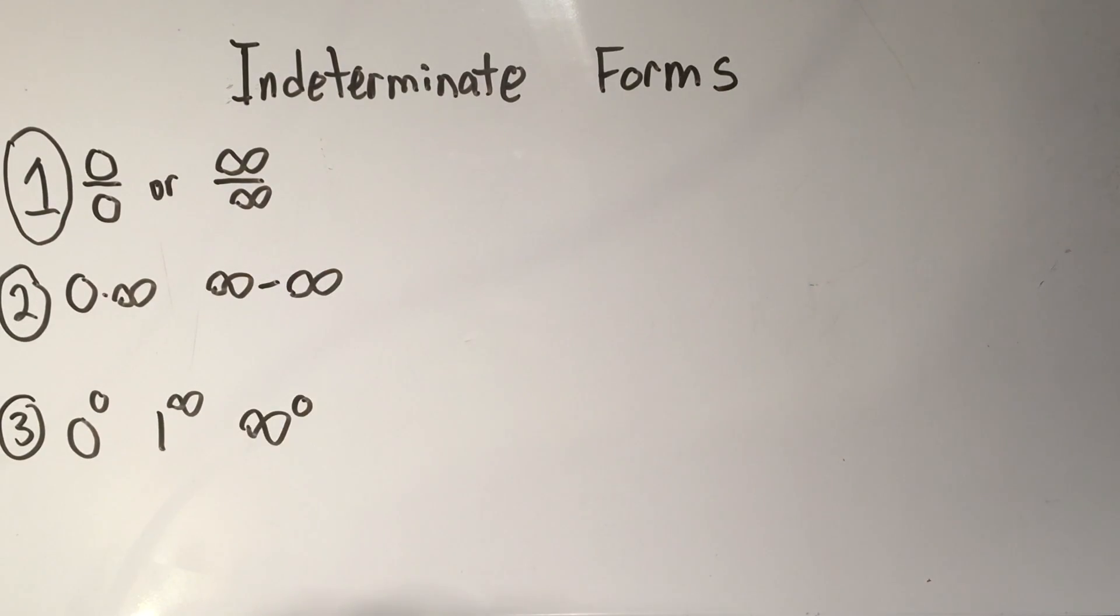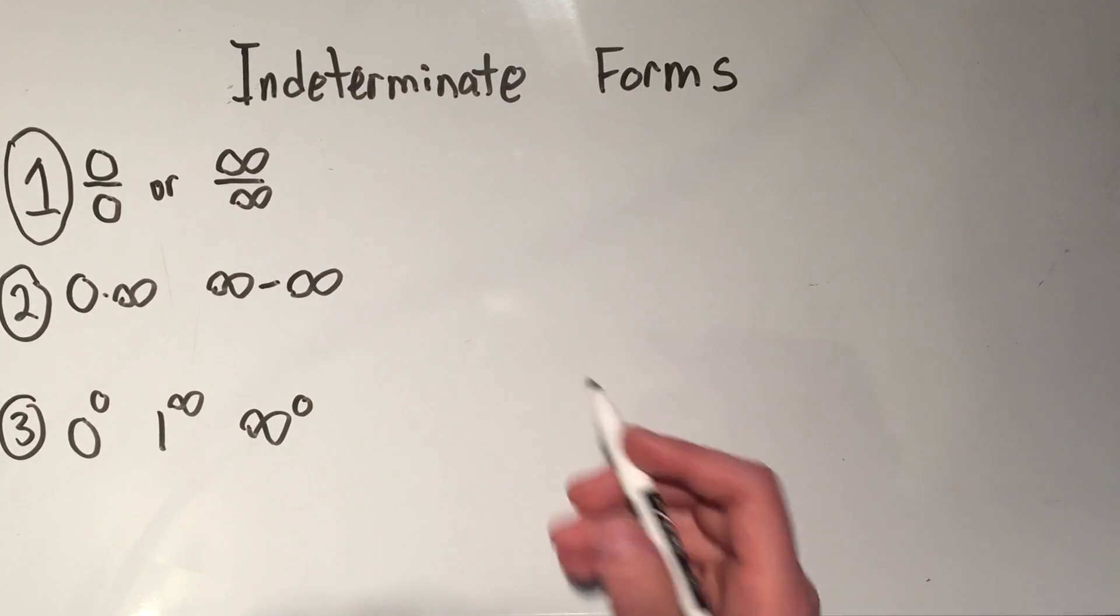And again, if I'm going too fast, please just give me a pause, rewind, watch the video again. Stage three, this is the hardest: this is when you have zero to the zero, or one to the infinity, or infinity to the zero.